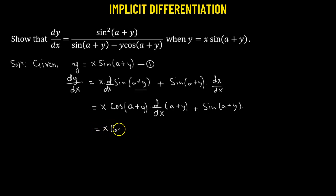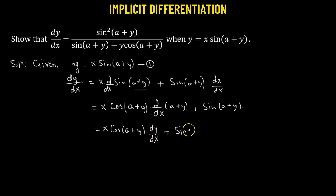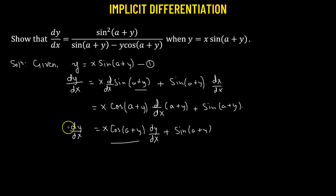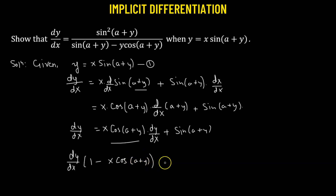This gives us x times cosine(a + y) multiplied by — the derivative of a with respect to x is zero, plus dy/dx — plus sine(a + y). We now have dy/dx expressed. We'll transpose the first term from the right-hand side to the left-hand side and combine it with dy/dx to get (1 − x·sin(a + y))·(dy/dx) = sine(a + y).